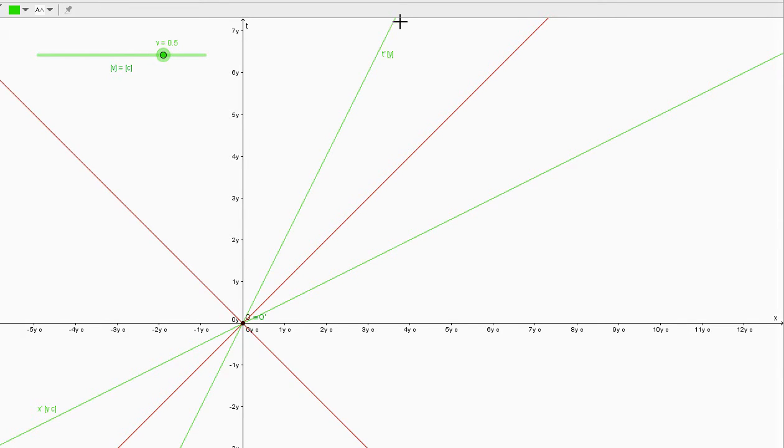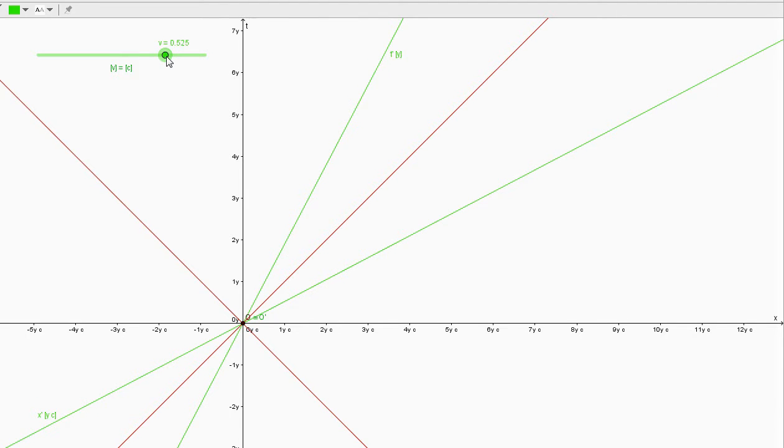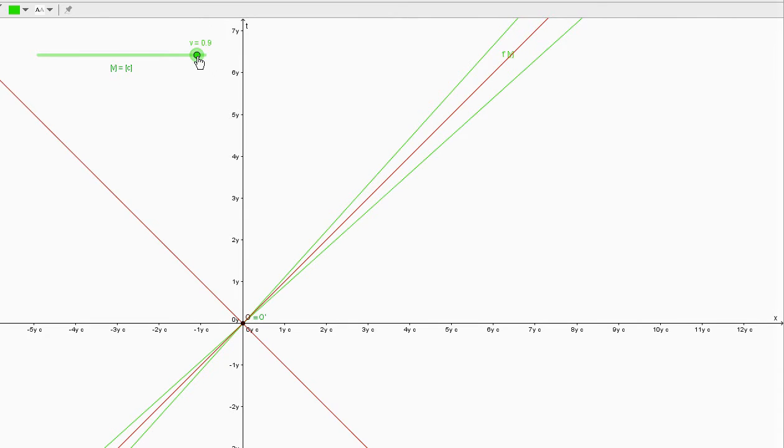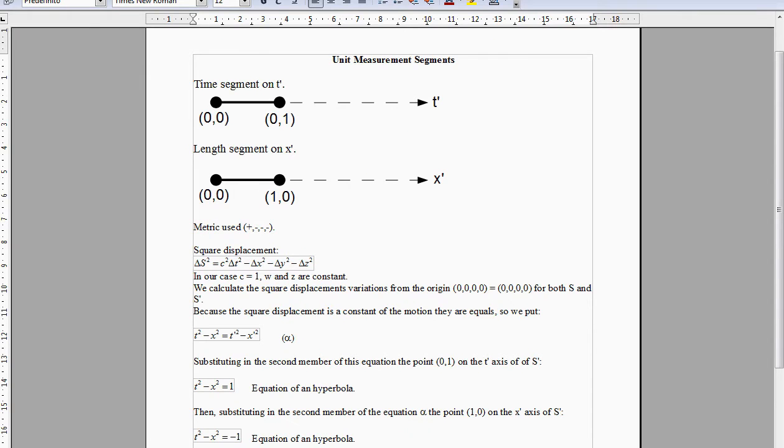Now, this angle and this angle have the same value, and increasing the speed of the S' frame, its two axes close like a scissor until they reach the red line, that describes the motion of a light beam.